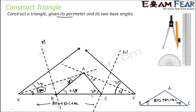Please pause the video and understand the steps. First, we drew a line XY equal to the perimeter. Then we drew the two given angles and their angle bisectors, which met at point A. Then we drew perpendicular bisectors of XA and YA, which touched line XY at points B and C. So ABC is the required triangle.